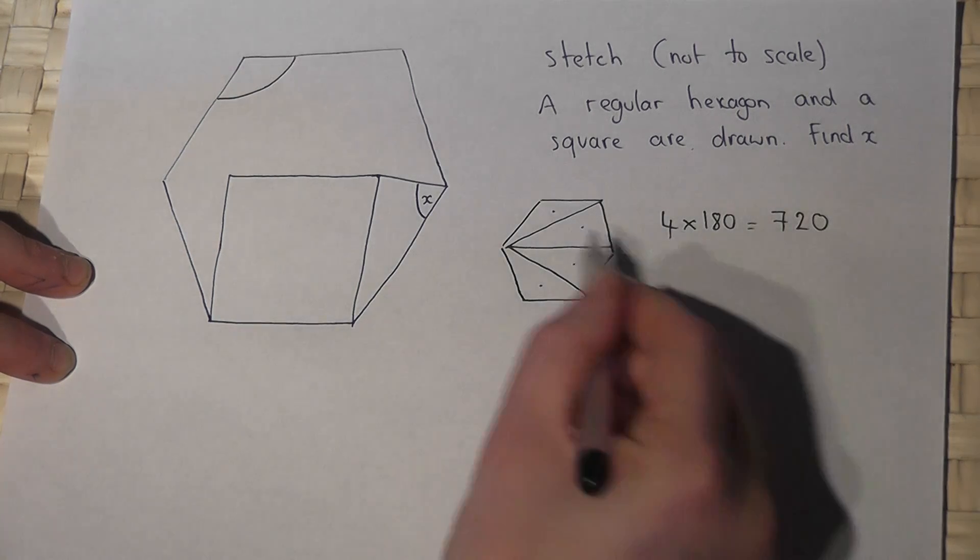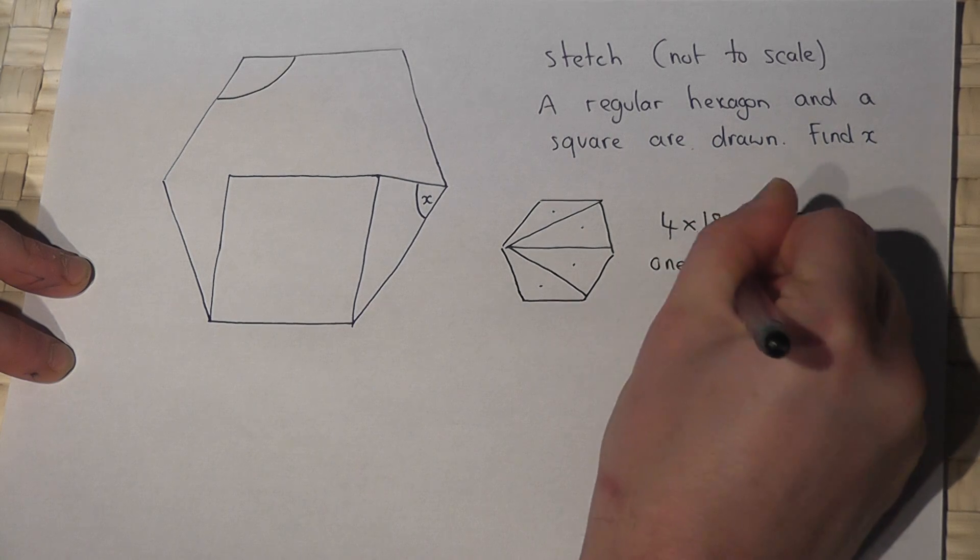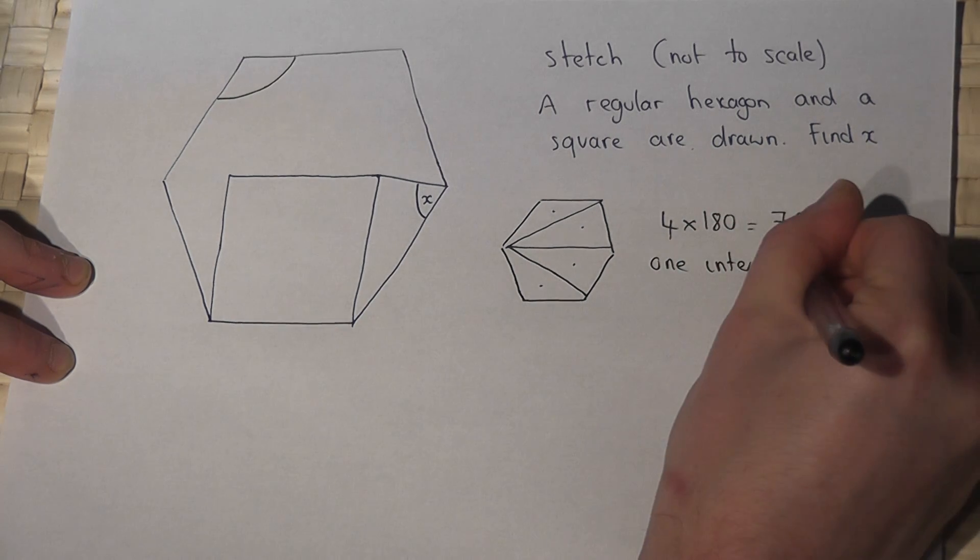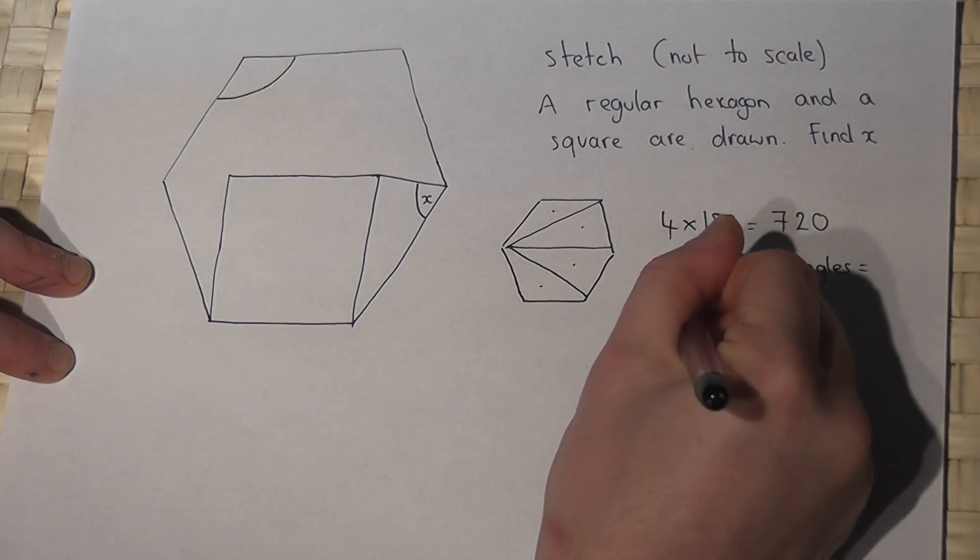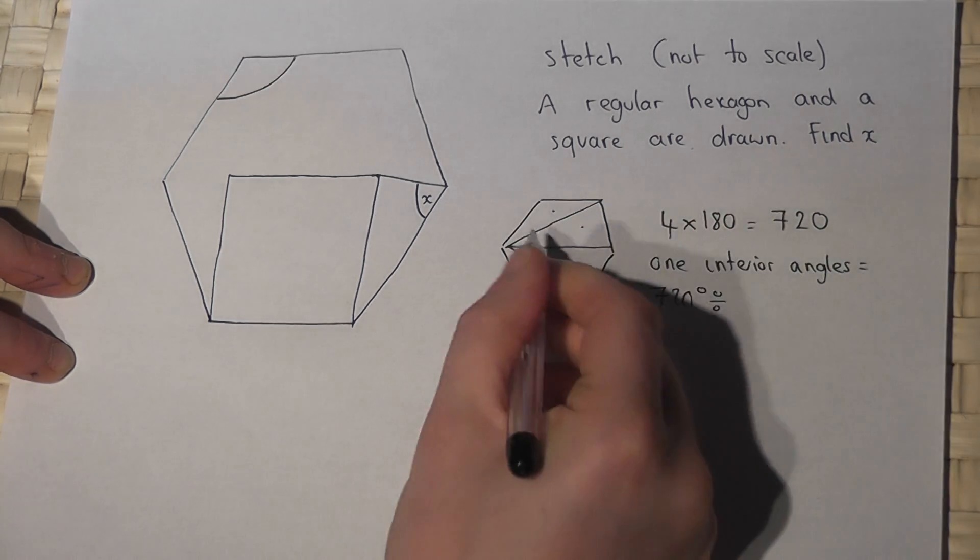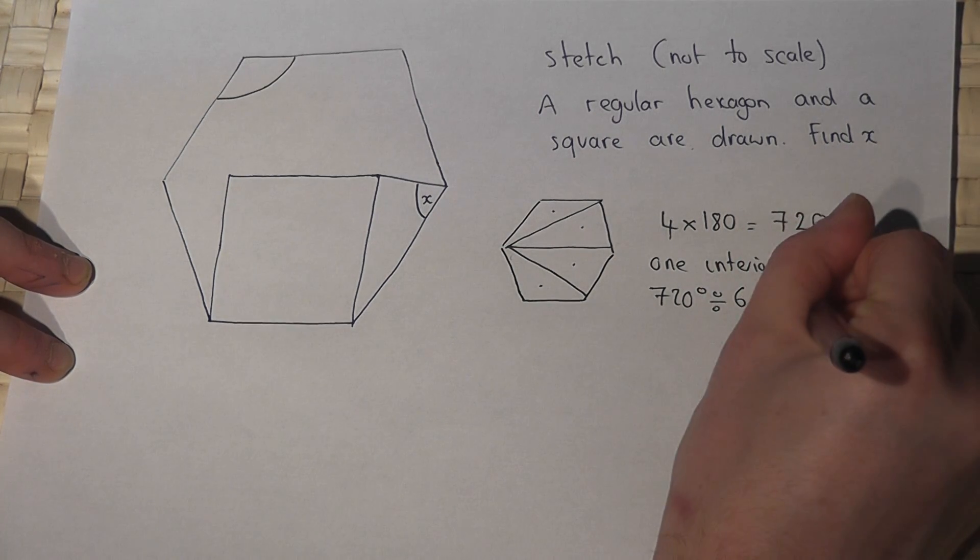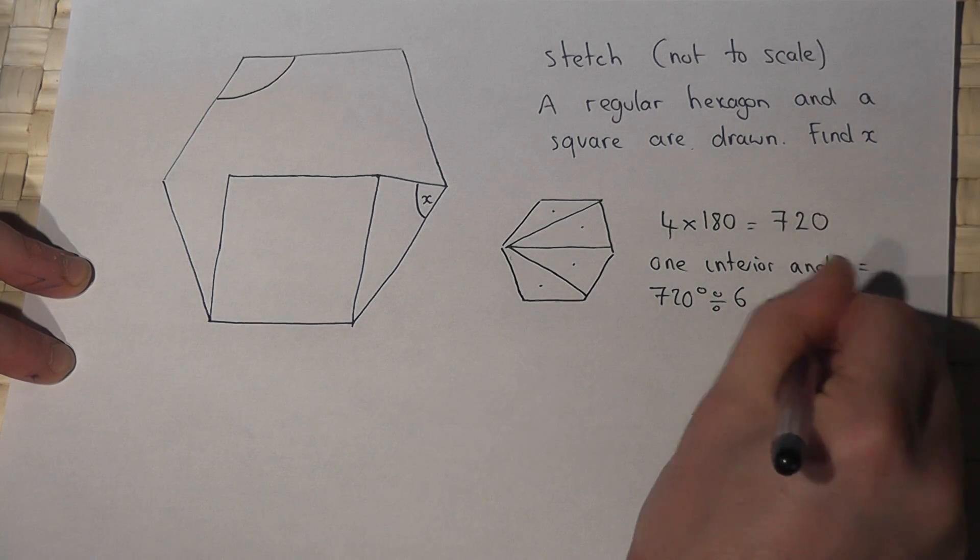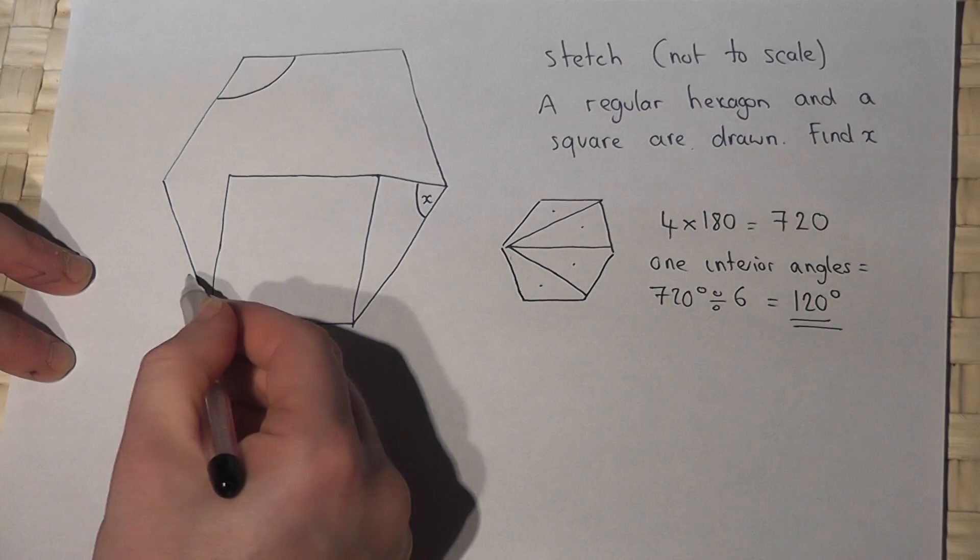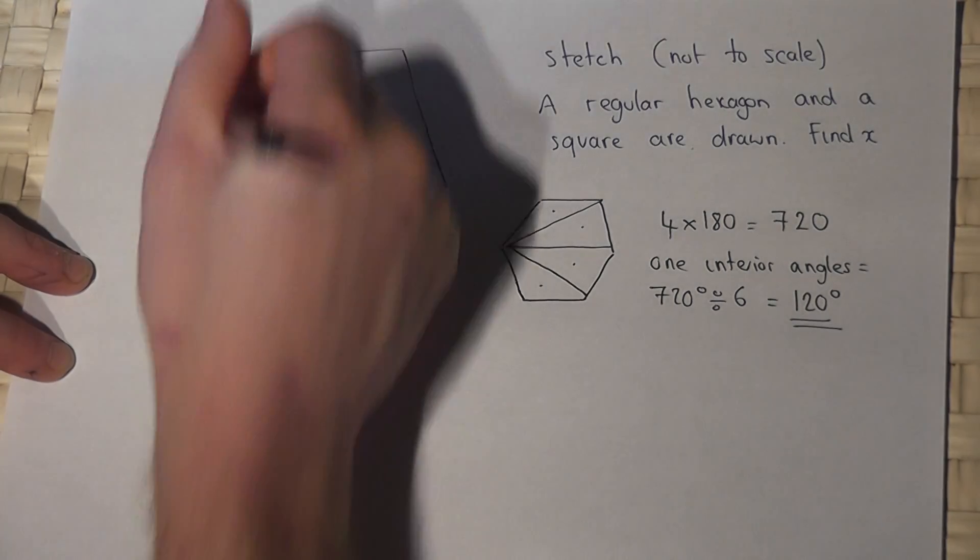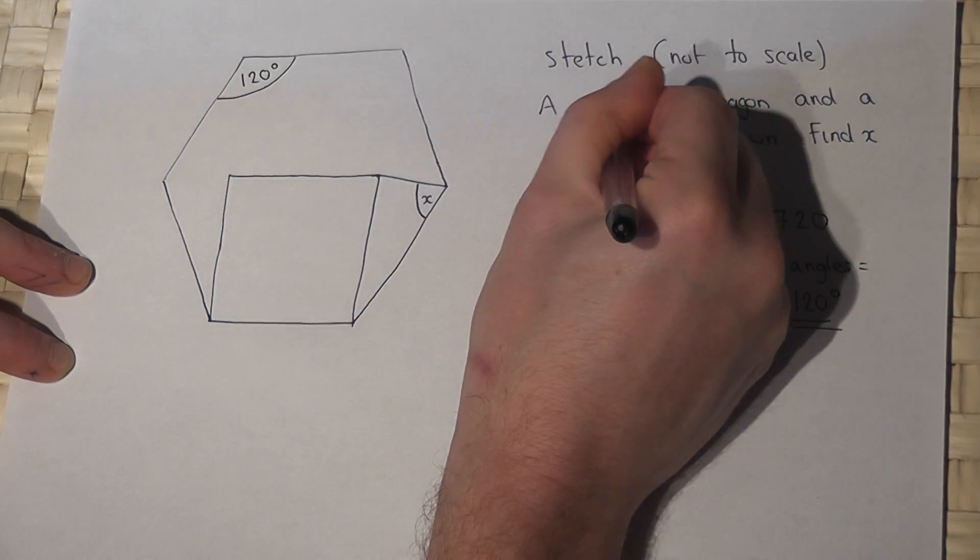So that's the sum of all the interior angles. So one of the angles just equals 720 divided by six because there are six of them and 720 divided by six is 120 degrees. So I know that all of these interior angles has a value of 120. They're the same because it's regular.